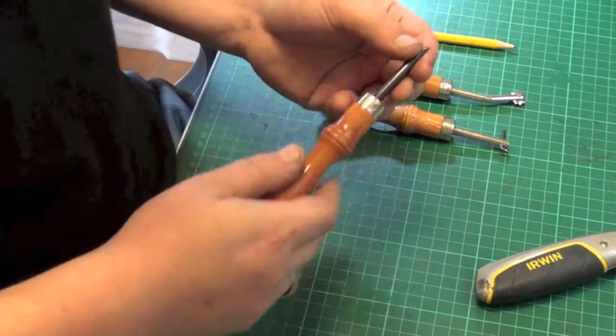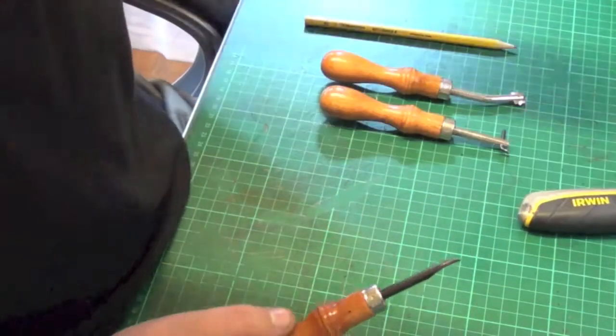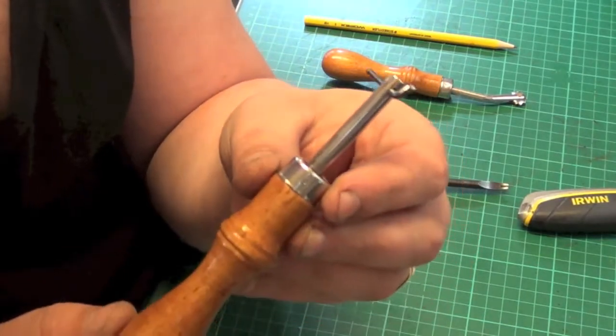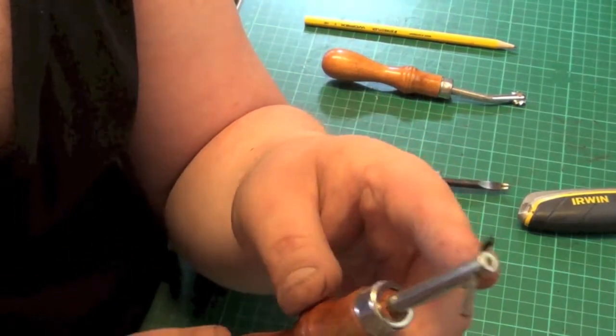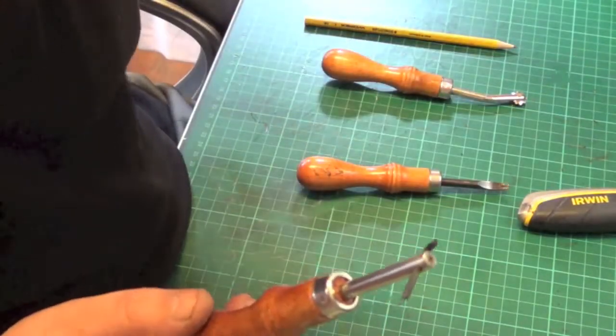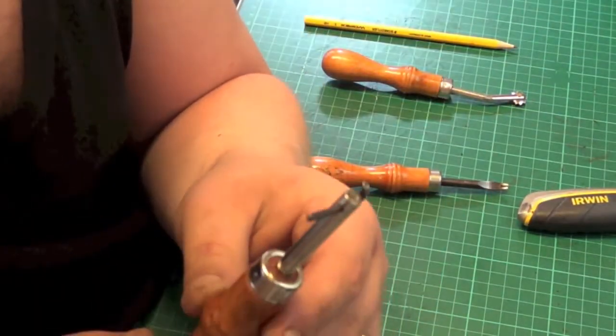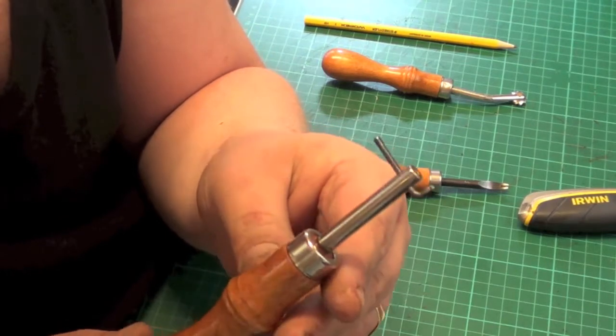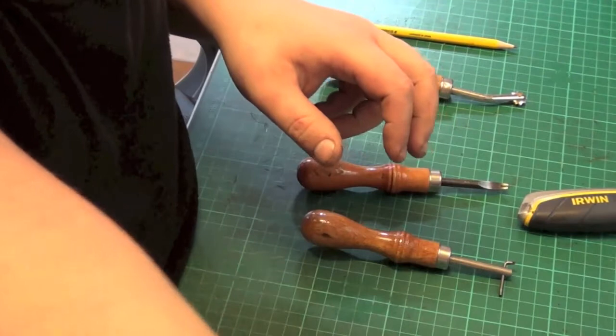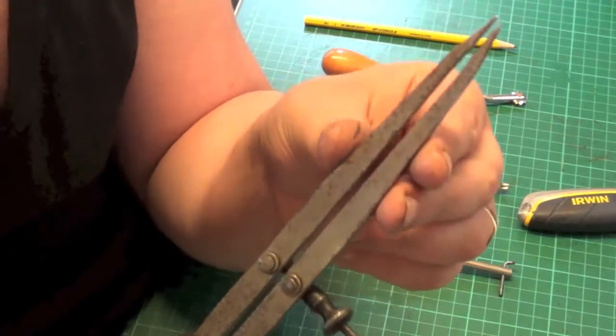Then you want a stitch groove. Now you don't have to buy one of these, but they're very useful, an adjustable one preferably. You can use other ways and means of doing it. You can use a set of wing dividers.